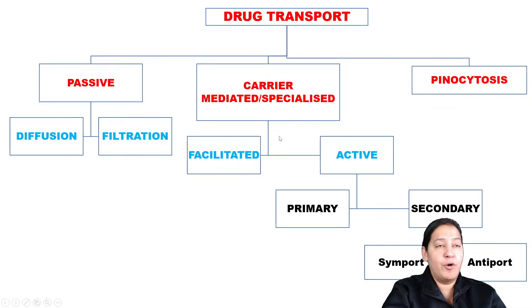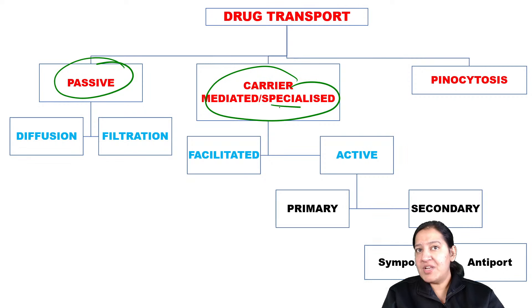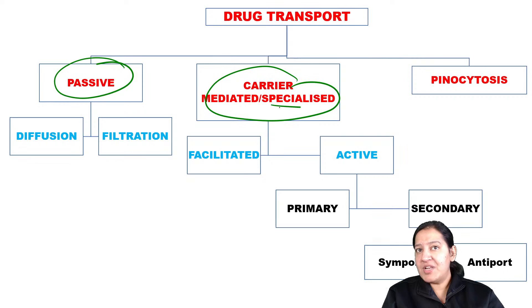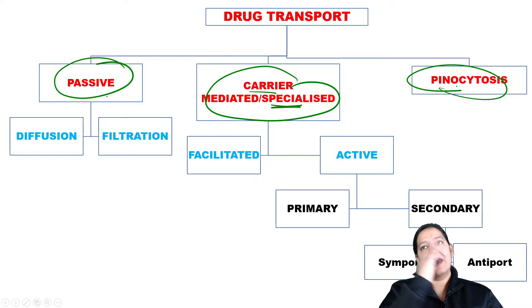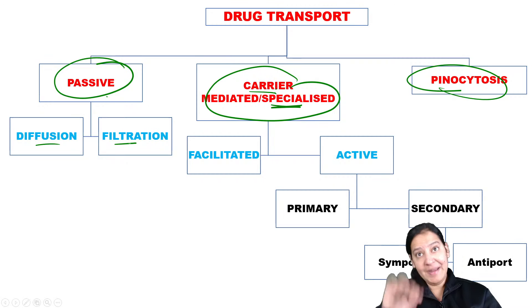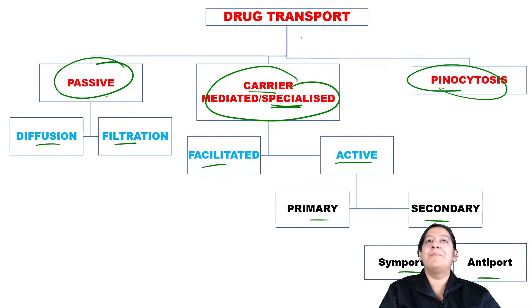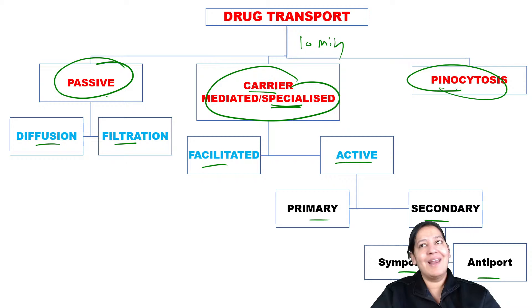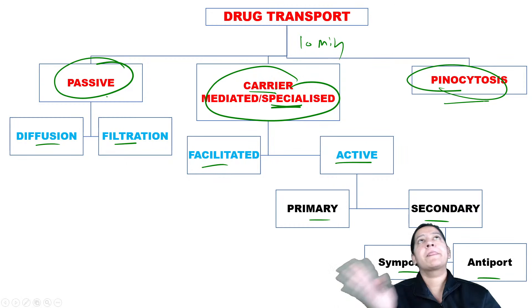There are three types of drug transport: passive, carrier-mediated (specialized), and pinocytosis. Passive is of two types: diffusion and filtration. Carrier-mediated is of two types: facilitated and active. Active is of two types: primary and secondary. Secondary is of two types: symport and antiport. Pinocytosis has no further subtypes. In passive transport, no carrier and no energy are required.